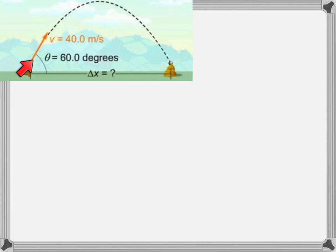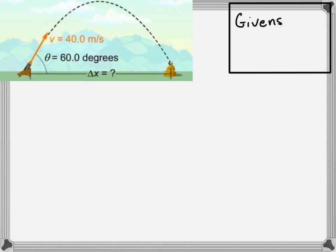This initial velocity is a vector, and vectors have both a magnitude and a direction. One of the first things to do is to split this vector up into components. We're going to do that with the same process used for the horizontal projectile problem: first figure out our givens — splitting the vector into its x and y components — then figure out which equations apply, and finally solve the problem.